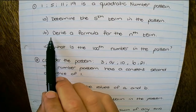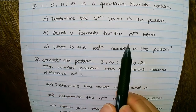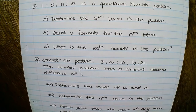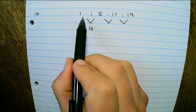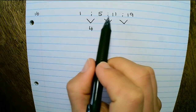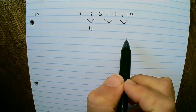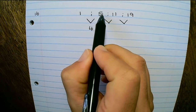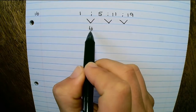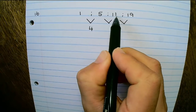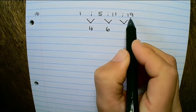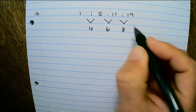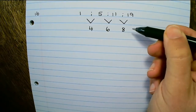Our second question is to derive a formula for the nth term, also known as the general term. To find the nth term we need to find the first differences and the second differences. The first differences are: 5 minus 1 equals 4, then 11 minus 5 equals 6, and 19 minus 11 equals 8.